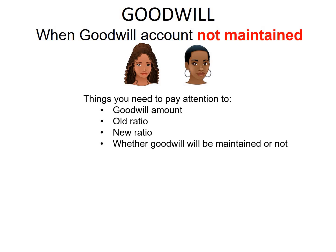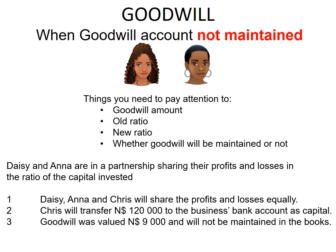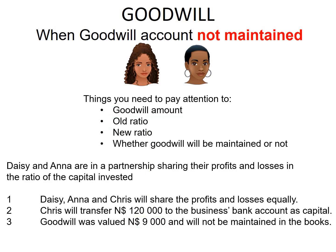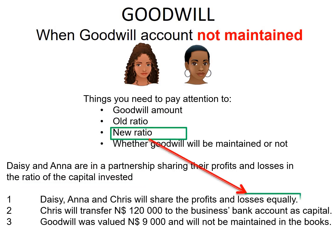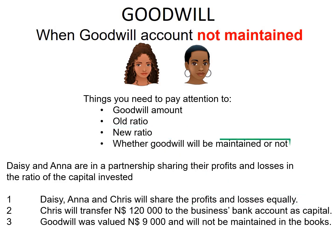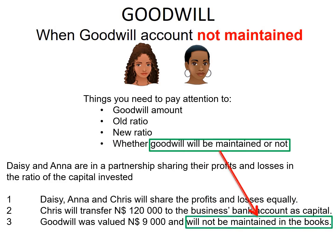These are the four things, and these are the three points we need to take into consideration. First, the Goodwill amount is the $9,000 at number 3. The second thing is the old ratio, which will be calculated from the capital invested by Daisy and Anna. The third thing is the new ratio, shown at number 1, where Daisy, Anna, and Chris share profits and losses equally. And lastly, at number 3, it says Goodwill will not be maintained in the books.